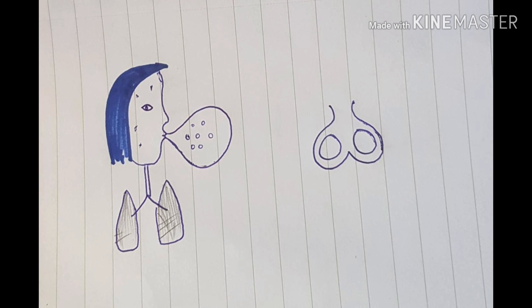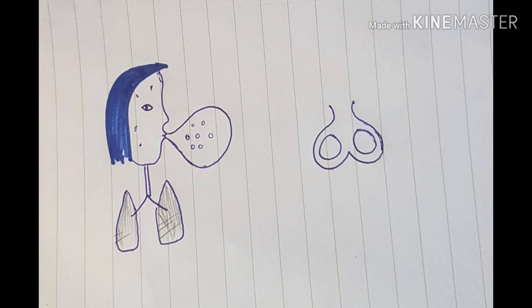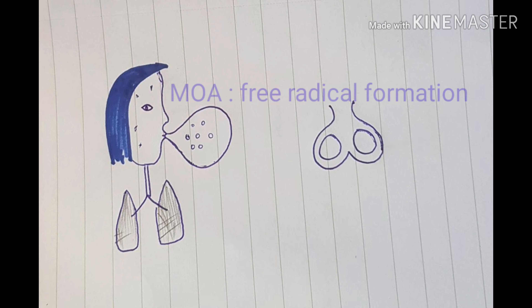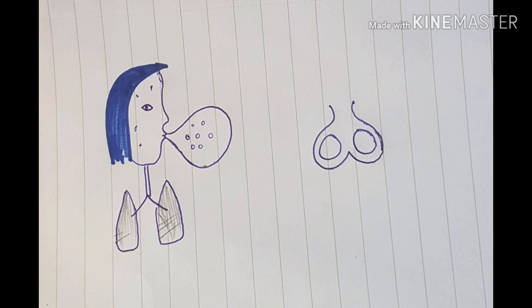We'll start with bleomycin. This picture should remind you of bleomycin because this guy is blowing a balloon — 'blowing' for bleomycin. The mechanism of action is that this drug induces free radical formation and breaks DNA in tumor cells. The bubbles inside the balloon remind you of the formation of free radicals, and those free radicals cause DNA breakage.